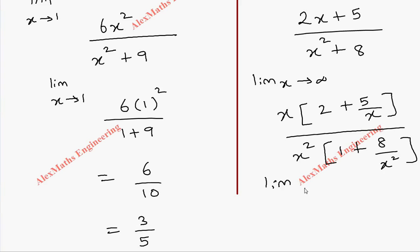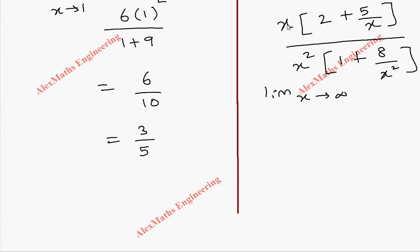Now we have to write limit x tending to infinity. We can cancel this x and x square and after that we substitute the value of x. So that is nothing but numerator we have 2 plus 5 divided by infinity.